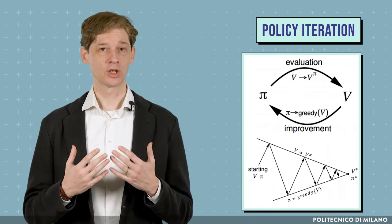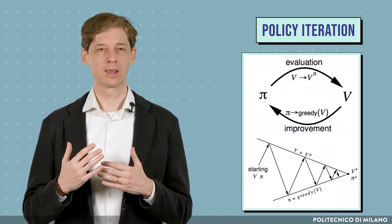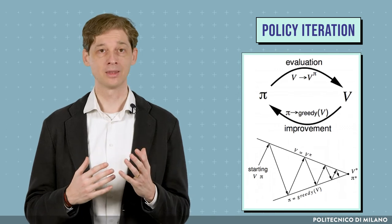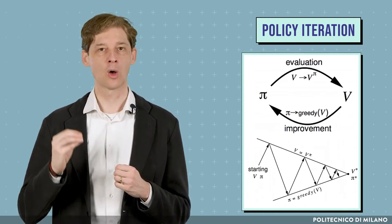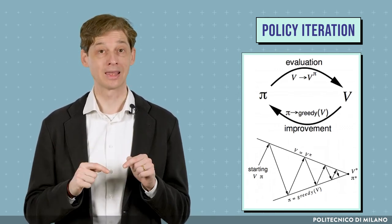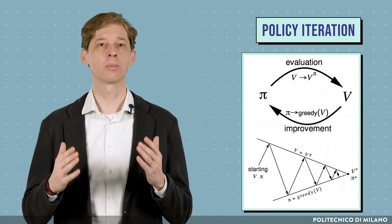When, during the iteration, we find a policy π' that has the same value function of policy π, it means that we have found the optimal value function, and that π and π' are optimal policies.